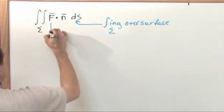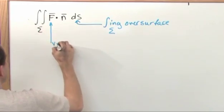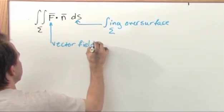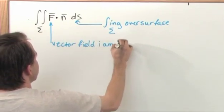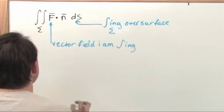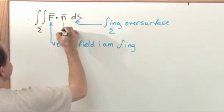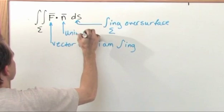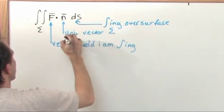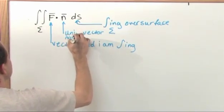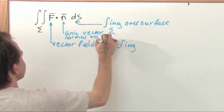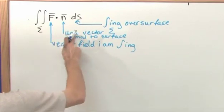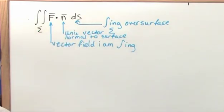This thing is the vector field that I am integrating, okay? And this thing is a unit vector normal to the surface. And what surface am I talking about? It's a unit vector normal to the surface here, okay?